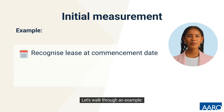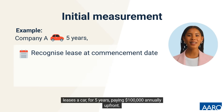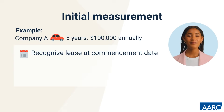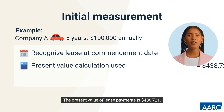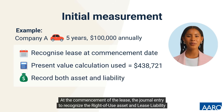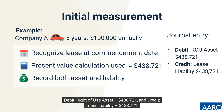Let's walk through an example. Company A leases a car for five years, paying $100,000 annually up front. The discount rate used is 7%, and the present value of lease payments is $438,721. At the commencement of the lease, the journal entry to recognise the right-of-use asset and lease liability is: Debit right-of-use asset $438,721 and Credit lease liability $438,721.